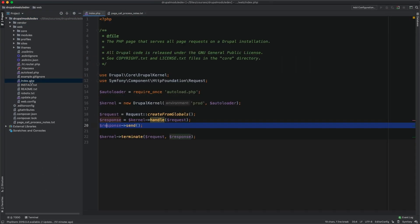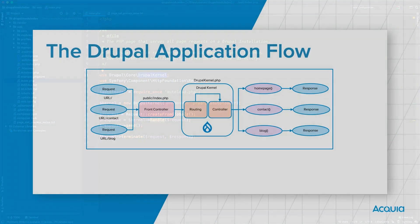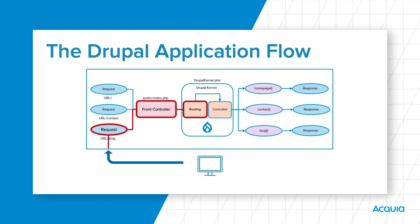I encourage you to open Drupal's top-level index.php. If you used Composer with the recommended project template, the index.php file will be located in the web directory. Remember there are two classes being used in index.php: the HTTP Foundation request component defined by Symfony, and the Drupal kernel class defined by Drupal core. By now we have seen how your Drupal application uses a front controller to talk to the Drupal kernel.